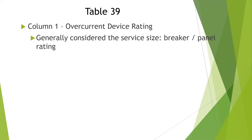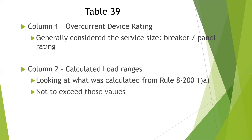Column one is our overcurrent device rating. So if we have 100 amps as what we are looking for, then we go to the 100-amp row. We can use column two to calculate the load for that conductor size. If we look under the 100-amp overcurrent device rating and follow that row for calculated loads of up to 89 amps, just focus on the fact that it's rated for 100 amps.